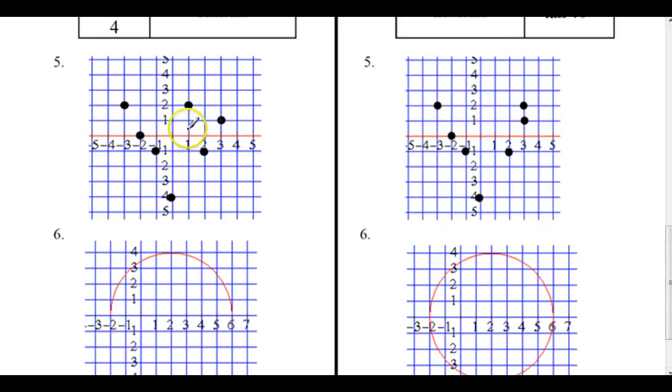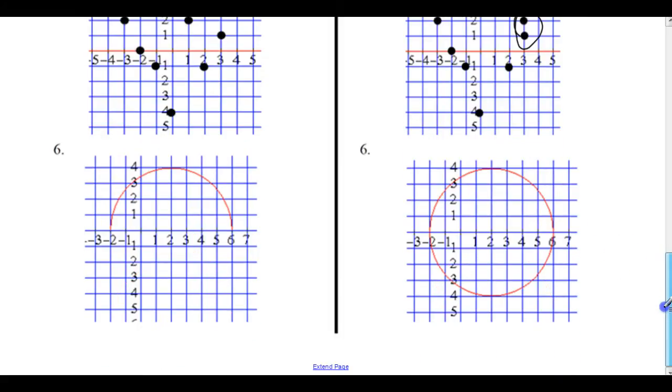We've got a graph. Notice in these two here, they have the same domain value. And in these guys, none of them, no two dots line up this way. Here, we have a semicircle. Here, we have a full circle.